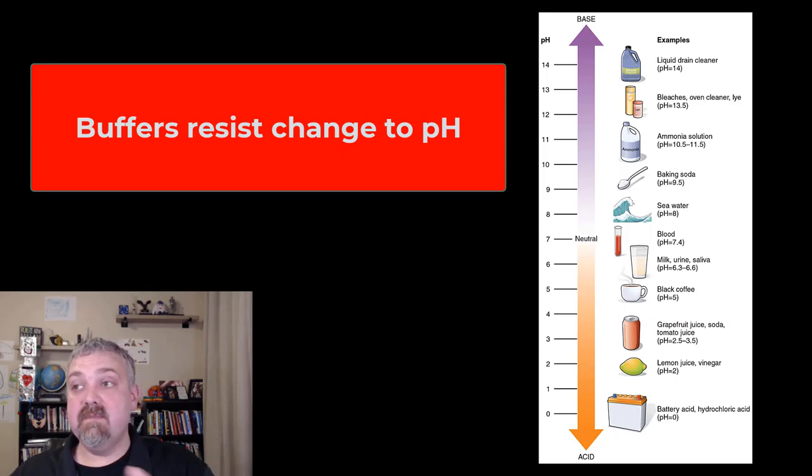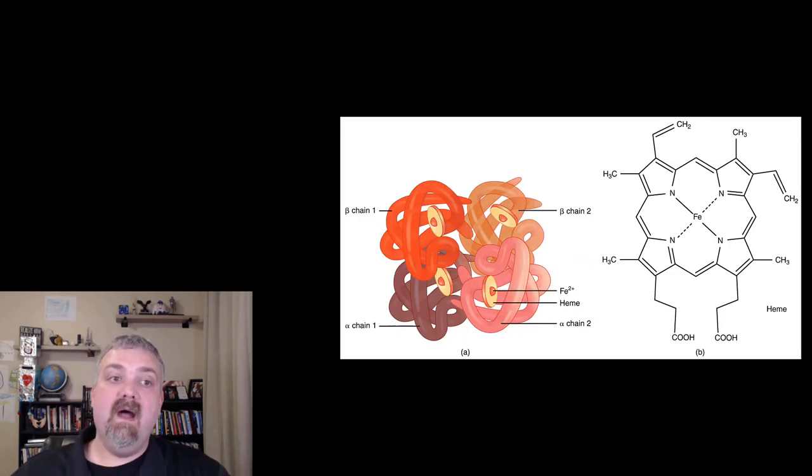A buffer is just any chemical system, anything that resists change to pH. How buffers generally work is they'll behave like a weak acid if you put them in a basic environment. They'll behave like a weak base if you put them in an acidic environment. The main advantage of buffers is they work really quickly, so they can maintain and stabilize pH.